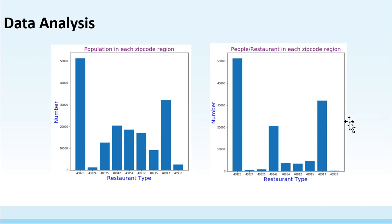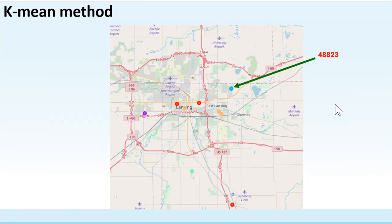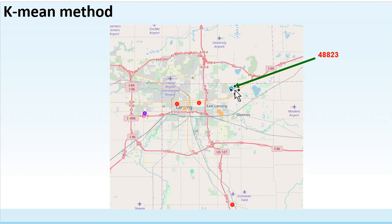In order to take into account these factors to reach our final decision, we need to use a machine learning method. We adopt the K-means method to cluster these regions according to their food preferences and population distribution. These regions are grouped into four clusters, and one cluster corresponds to the 48823 region.